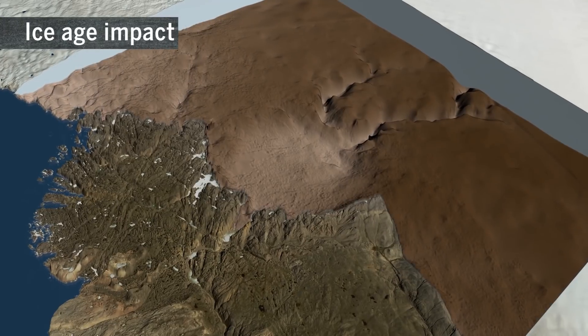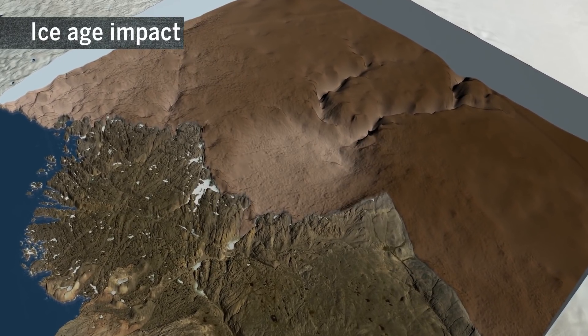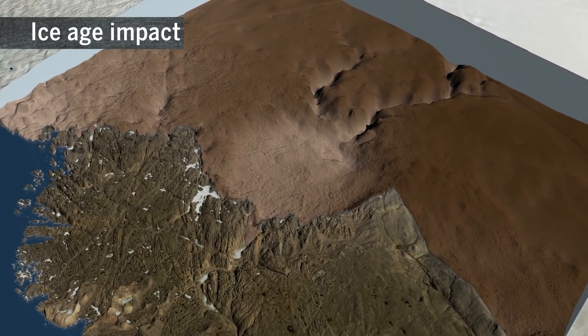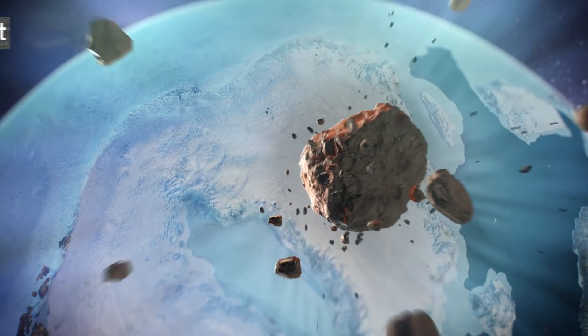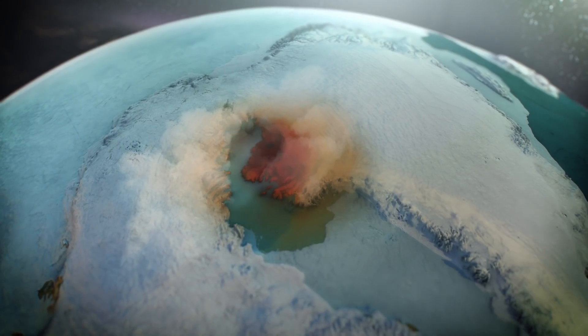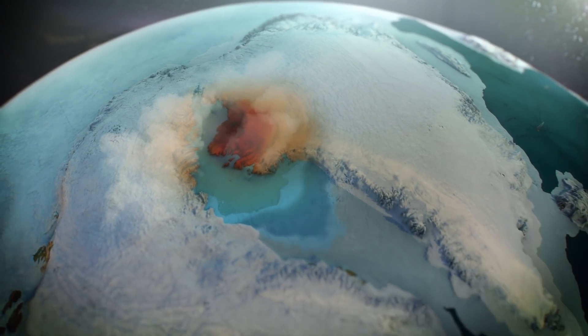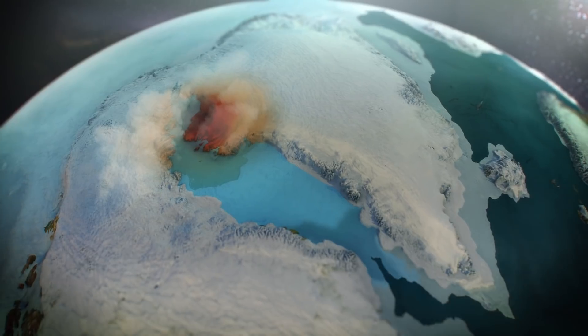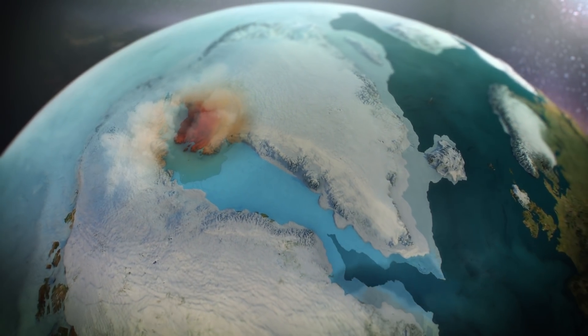Deep beneath the Greenland ice sheet, scientists have discovered a massive crater. It was created by the impact of a mountain-sized asteroid. The impact is relatively recent and hasn't yet been firmly dated, but the event may help explain some puzzling climate changes.